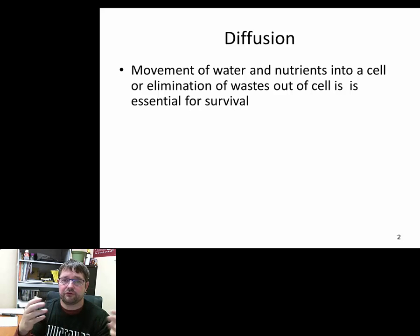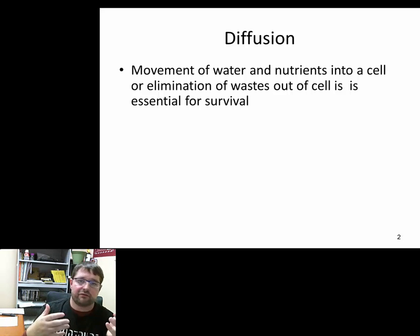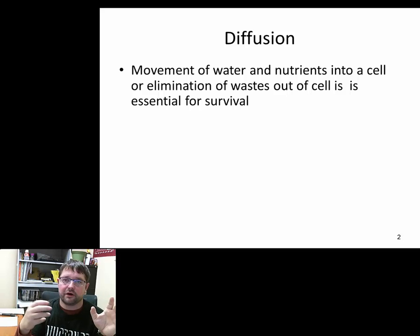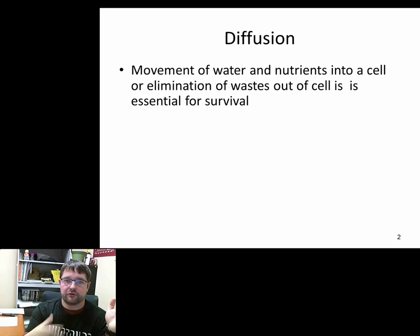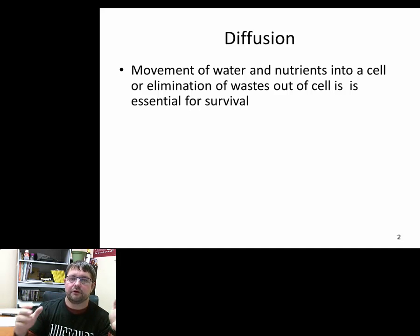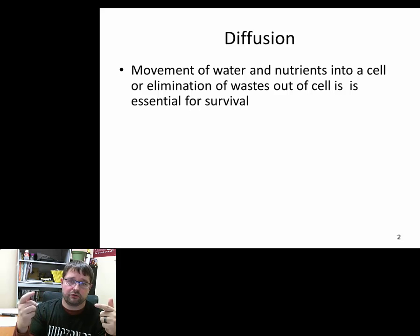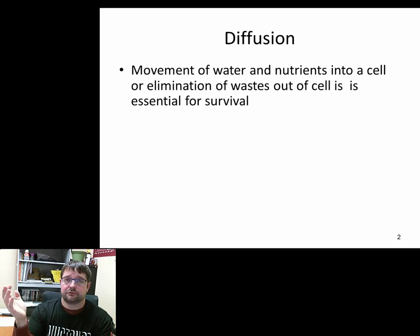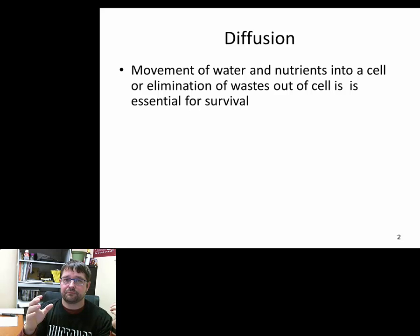Diffusion is the process of moving materials such as water and nutrients into a cell, and things like waste out of the cell. So how does water move into the cell and waste move out? How do nutrients get in and nutrient waste get out? This is essential for life to survive.